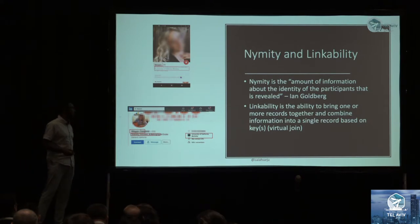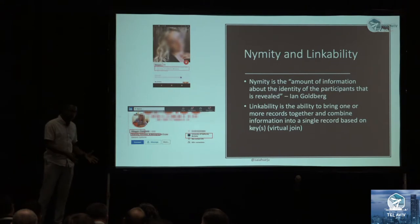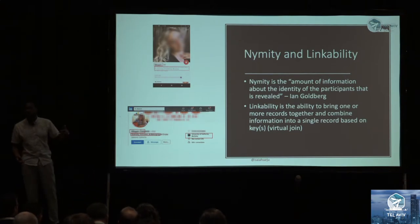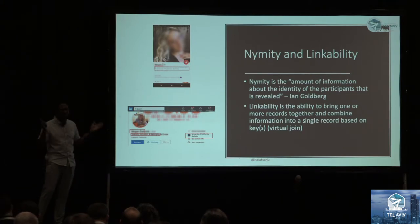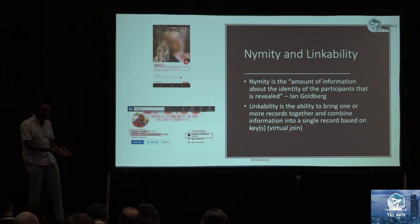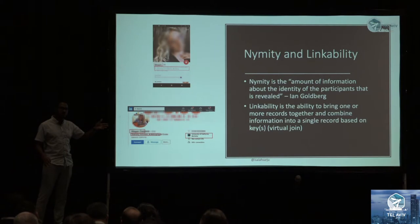Folks have asked why I blur out so much. Because this is a real person, and in security research, disclosure does not equal consent. This person chose to disclose their Tinder to a specific group of people in a specific geographic location. They did not consent to have their picture and LinkedIn put up at a conference in Tel Aviv. Some of the research I reviewed was flagrant with the data they put out — they just put out people's names and said well they did it so it's okay. No, it's not okay. They disclosed it to a group of people with a specific context and purpose of use. It's important when doing security research to understand that you're dealing with real lives and real people.